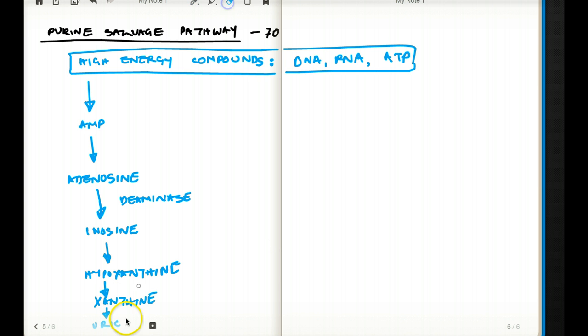From xanthine, we get uric acid. I'm going to write it on the side because it's going out of my screen. So from xanthine, we get uric acid. And where does uric acid go? Uric acid is excreted from our body. From xanthine to uric acid, this conversion is achieved by xanthine oxidase.